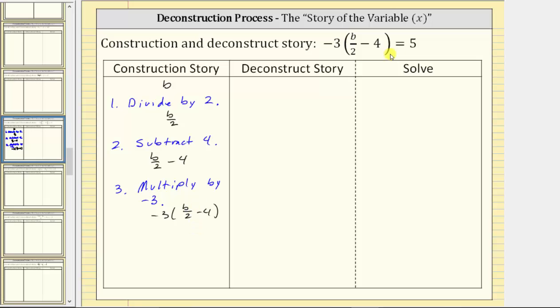Going back to the equation, we have equals five, which means the result of performing these operations on the variable is five. So the result is five, which gives us the complete construction of the equation, which is negative three times the quantity b divided by two minus four equals five.